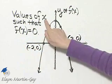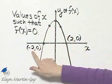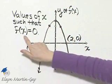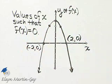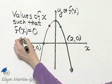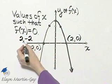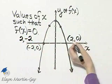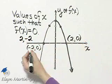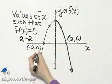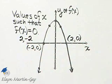So we want the values of x such that f of x, that's remember y, is 0. Those values then are 2 and negative 2. Because once again, f of 2 is 0 and f of negative 2 is 0. So here are our x values.